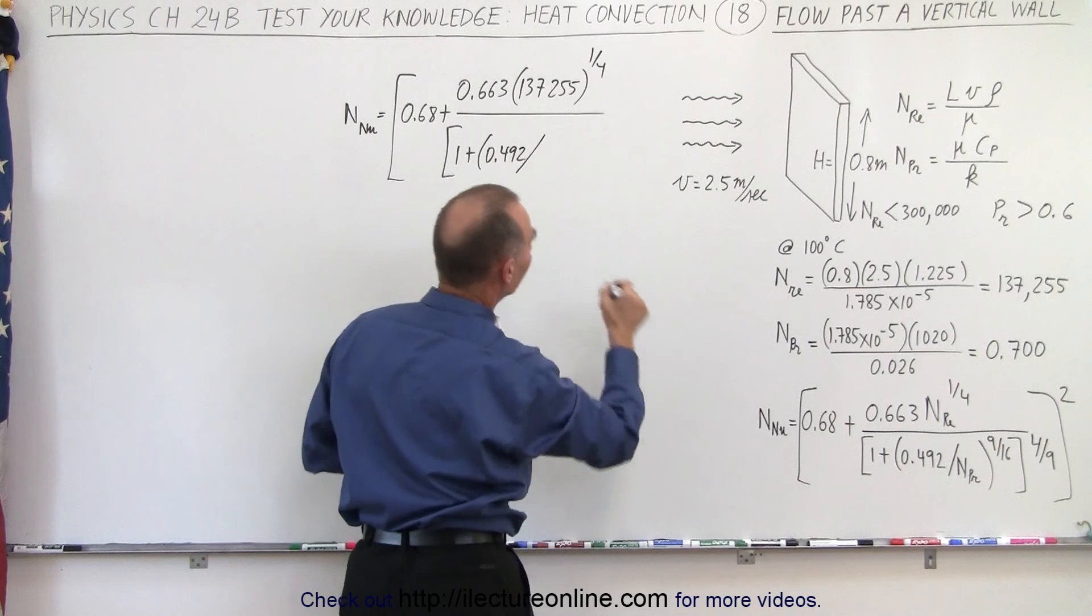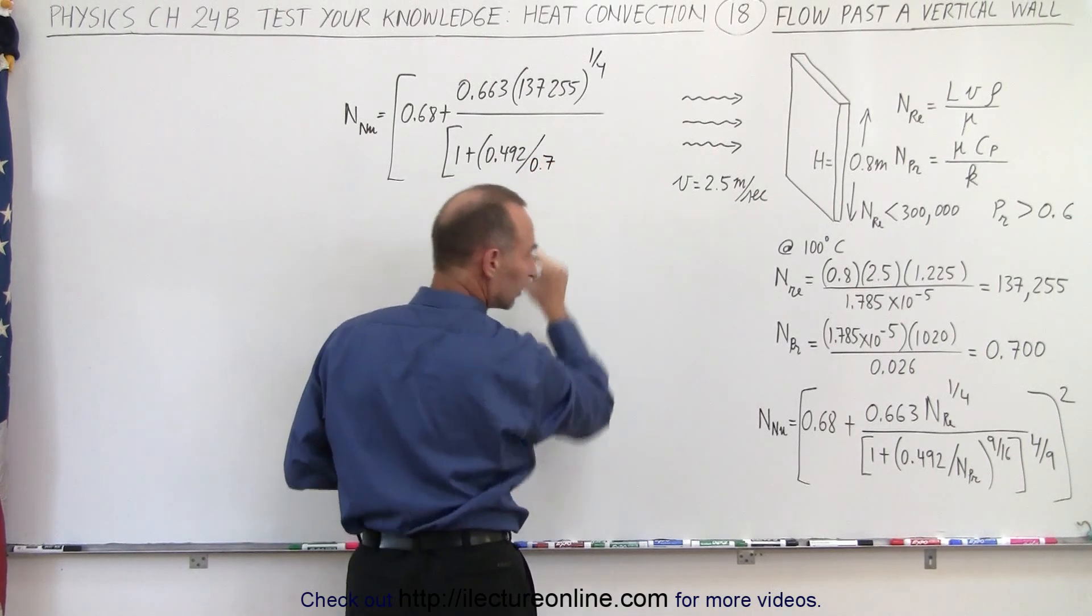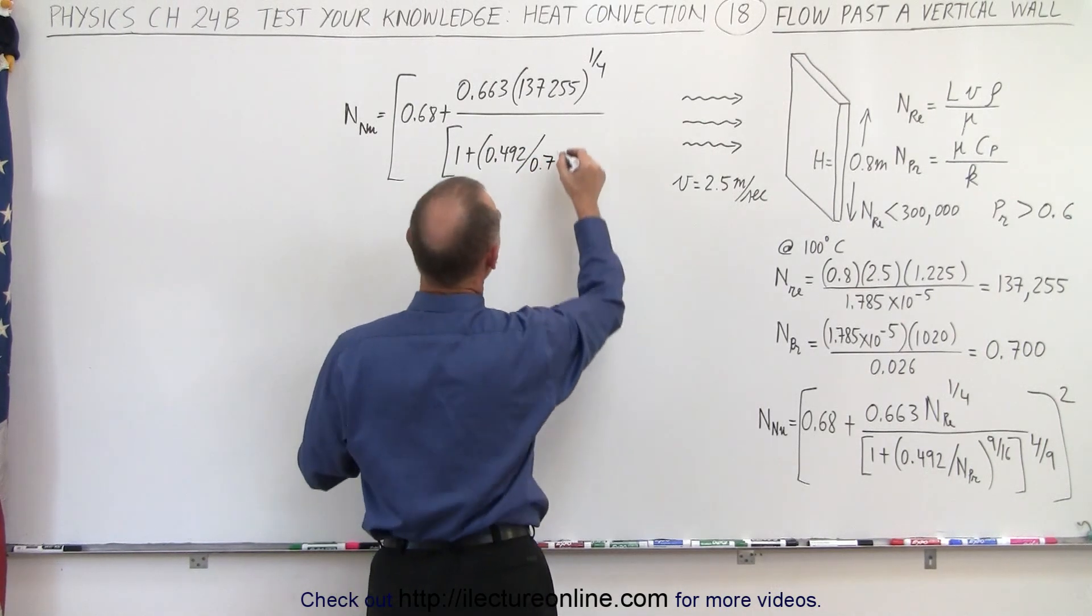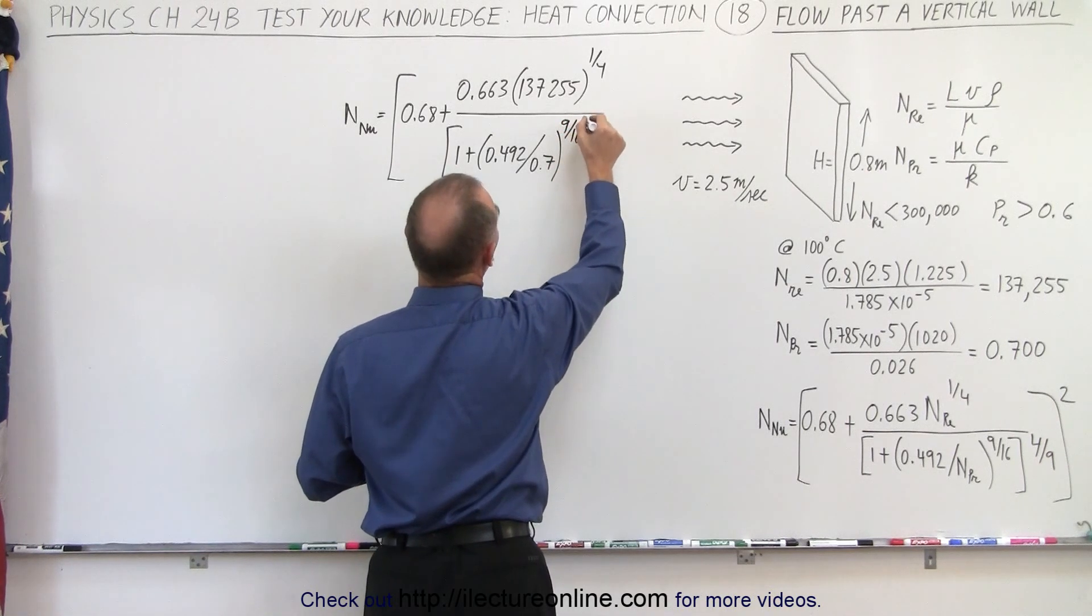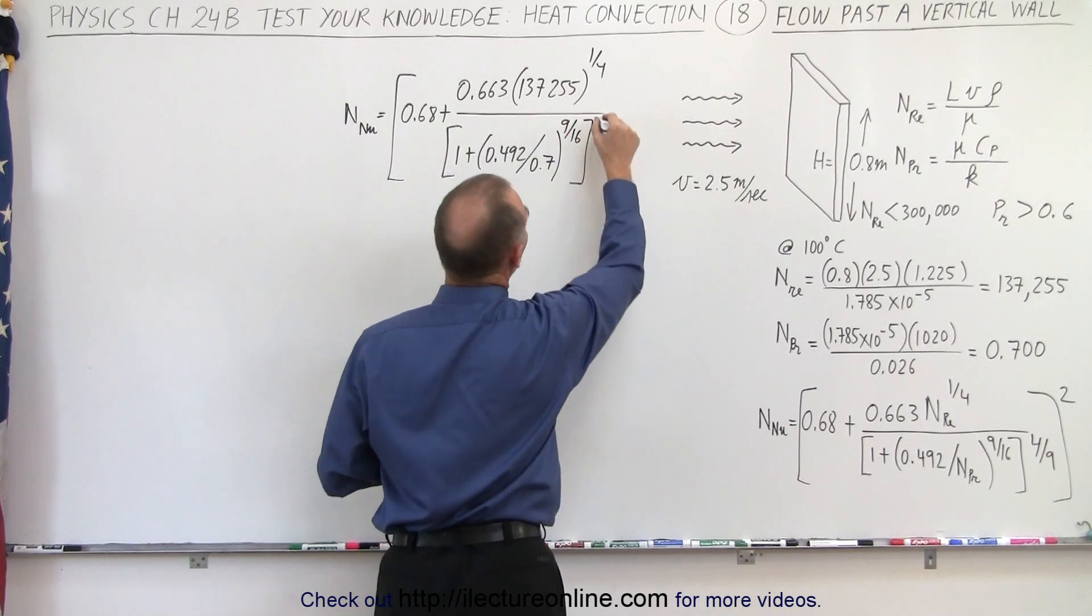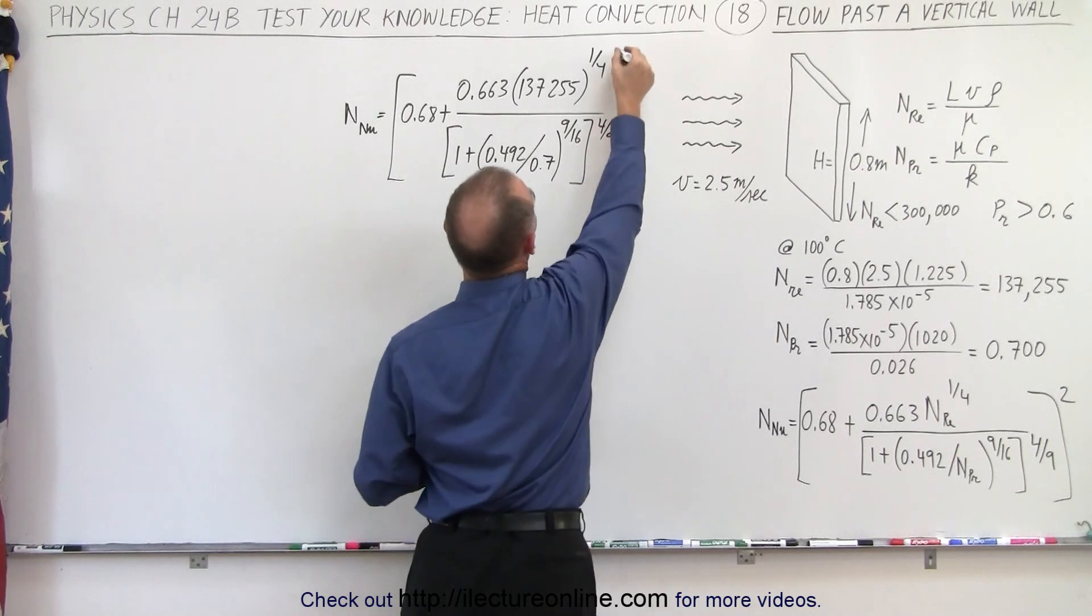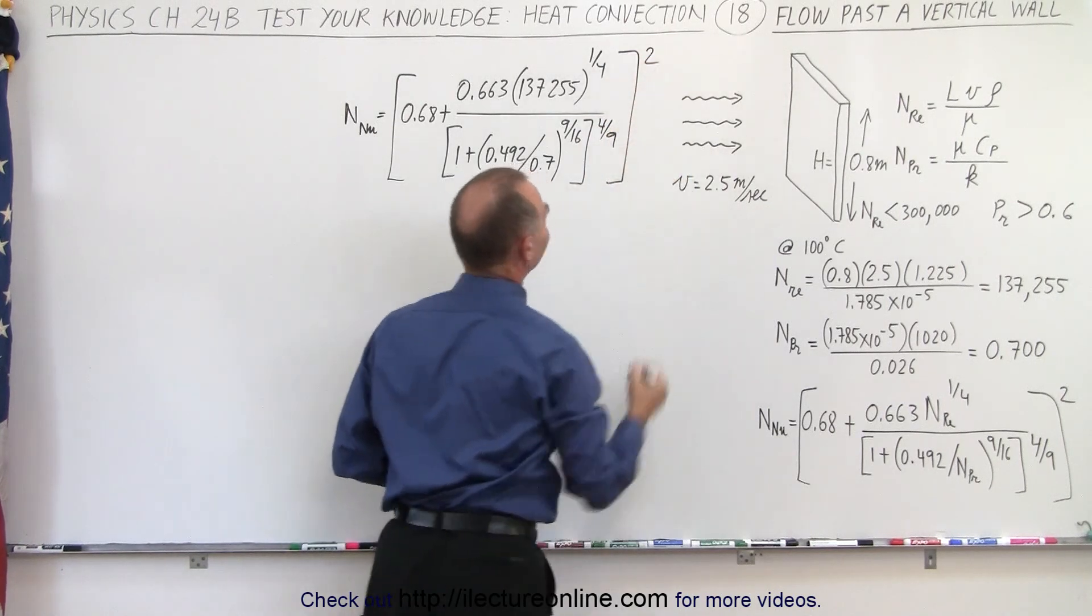Then divide that by the Prandtl number, which is 0.7, raise that quantity to the 9/16th power, and take all that and raise it to the 4/9th power, and then take the whole thing and square it.